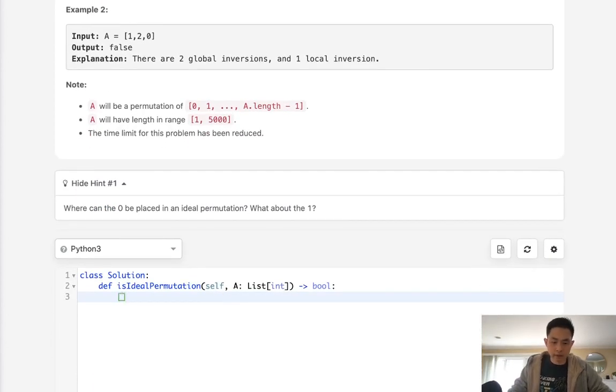So if we had say three two zero one we can see that this is the ideal permutation. We know at three this has three global inversions right because three is the greatest number and we know there's three numbers below that. Here we can see at two there's going to be two, zero there's going to be none and one will be none as well because that's the last. But to find global inversions is a little bit tricky. You can't do it in O(n) time